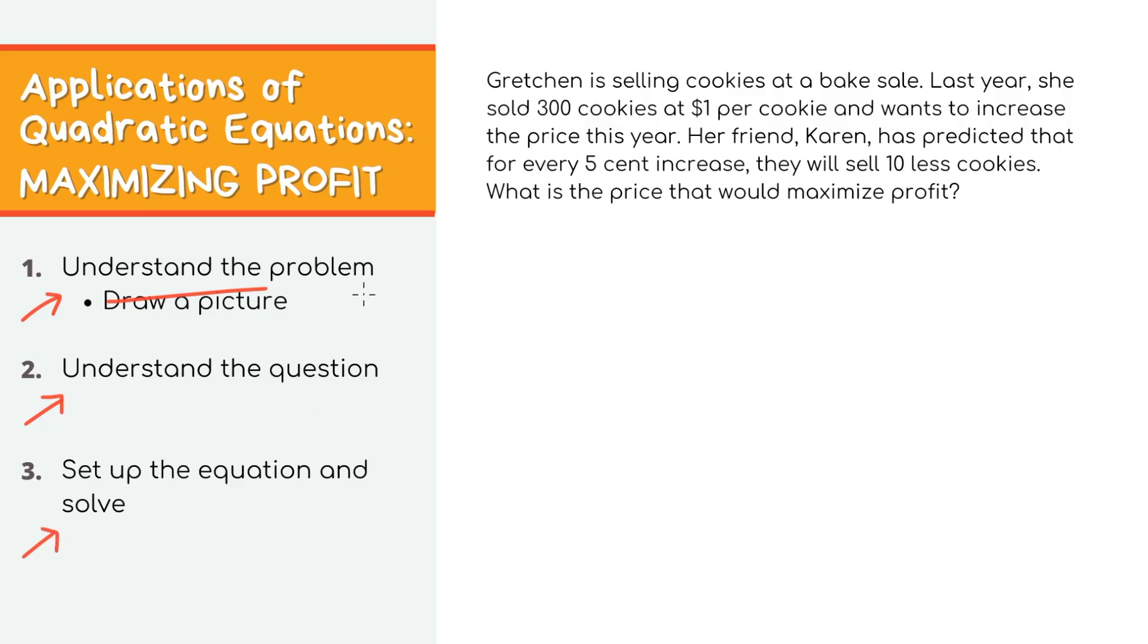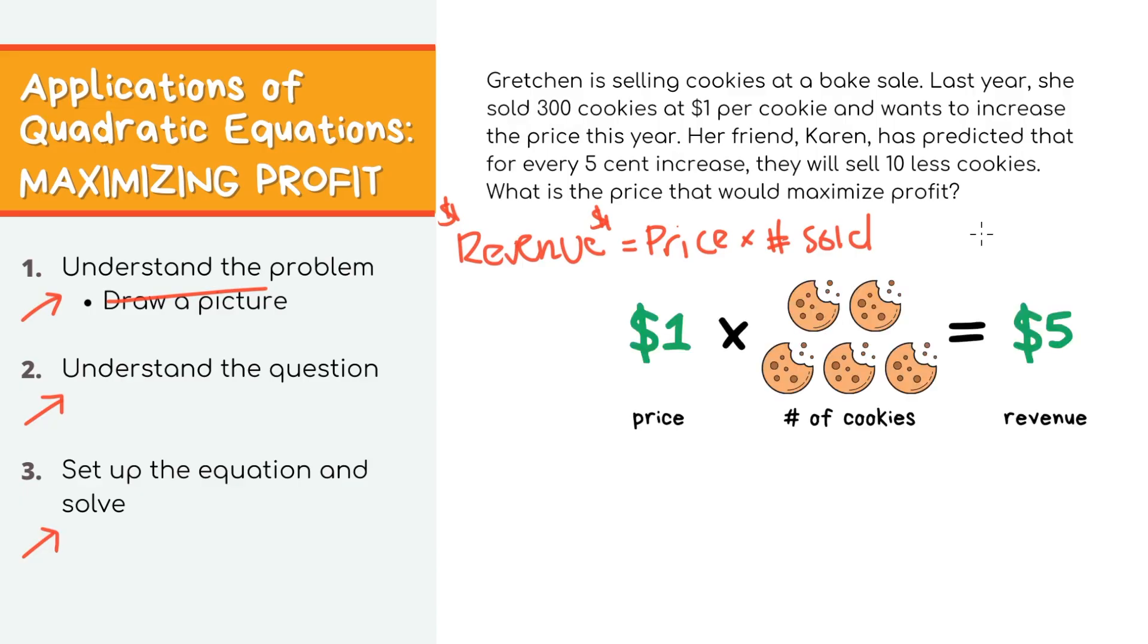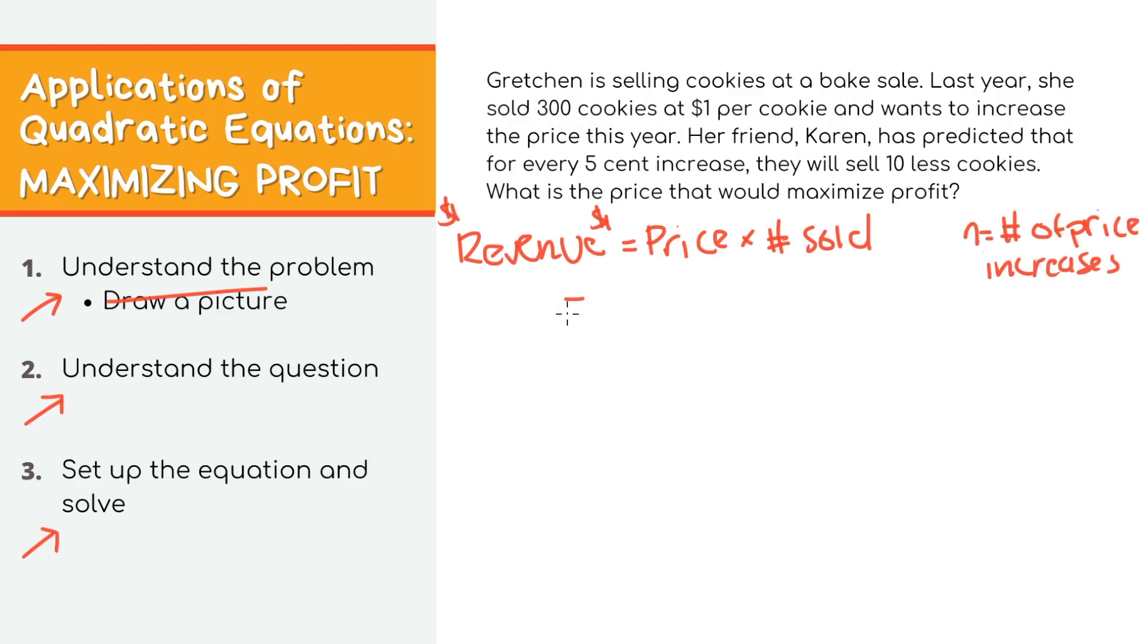When we're setting up the equation, just remember that revenue, also known as the amount of money you make, equals the price times the number of cookies sold. For example, if you sell 5 cookies for $1, the amount of money you make, or the revenue, is 1 times 5, which is $5. We'll write the formula in terms of n, where n is the number of times you increase the price. For example, if n equals 2, you're increasing the price by two increments, so the new price is $1.10. So going back to the formula, the price will be $1, which is your starting point, and you're thinking about increasing the price by 5 cents times n amount of times. Then for the number of cookies, you have your starting point 300, but you'll lose 10 cookies for each time you increase the price.